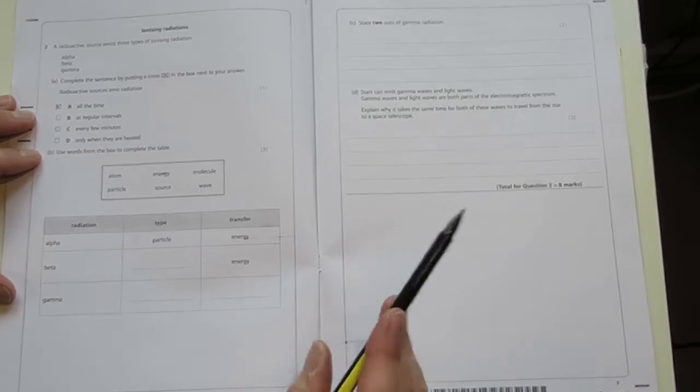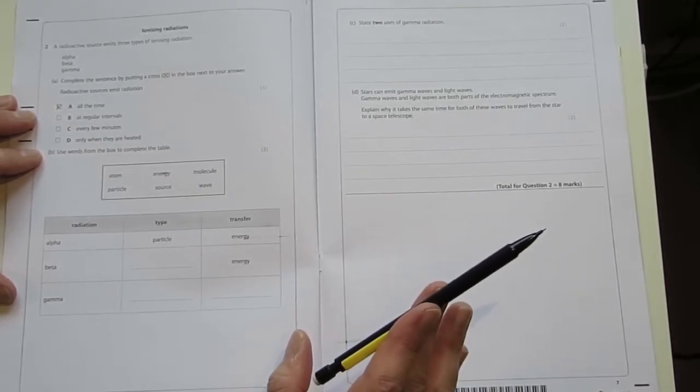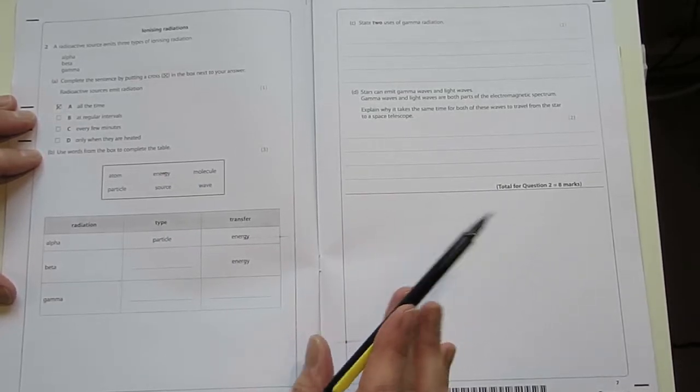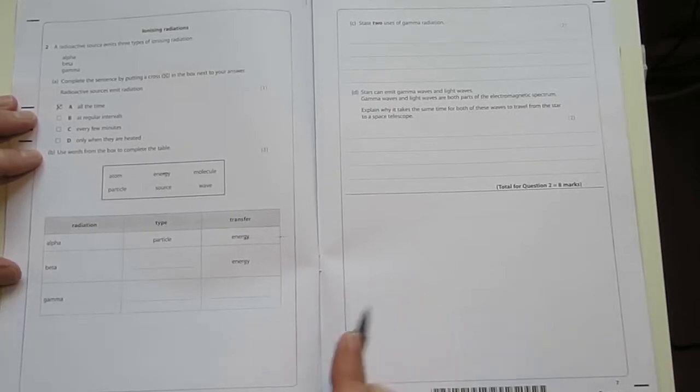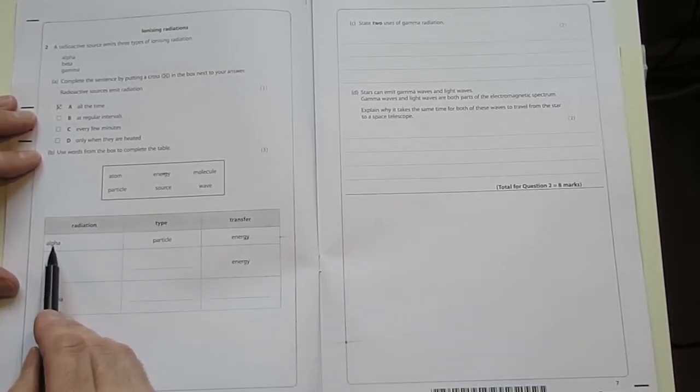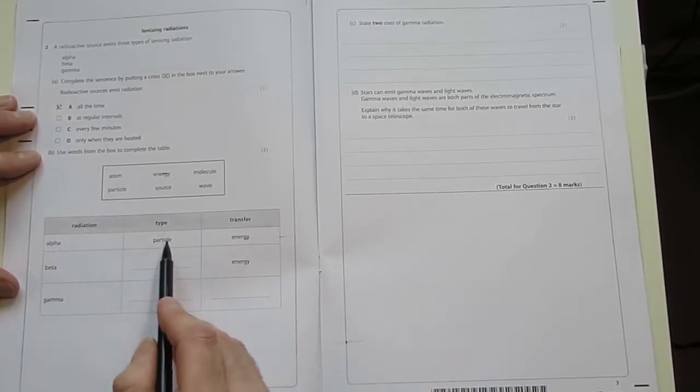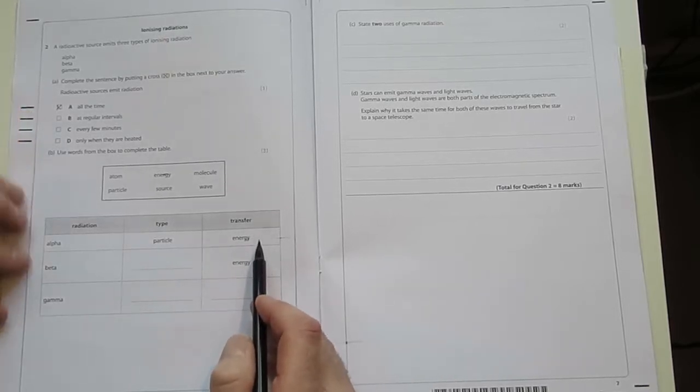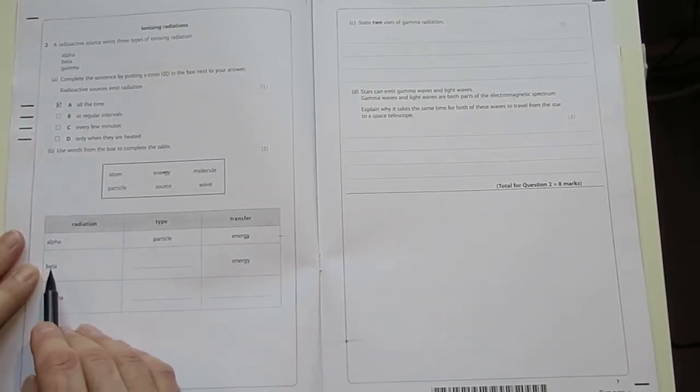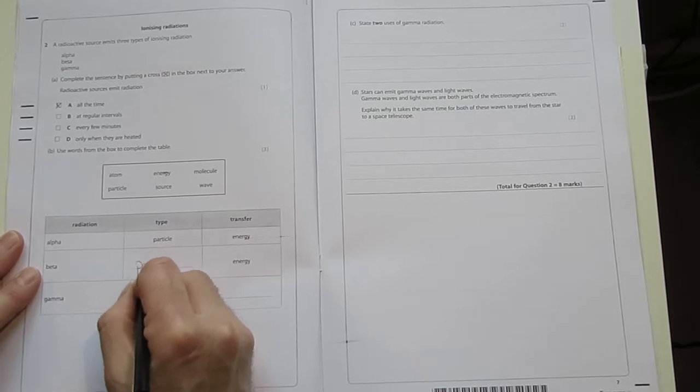The next question is testing our understanding of what those three sources, alpha, beta and gamma are all about and how they're made up. It gives one example here. Alpha radiation is a particle and it transfers energy. Beta radiation is also a particle.